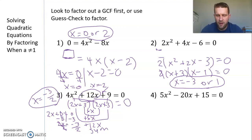I want you to pause for a second, look at number 4, and determine: should you do a GCF first or guess-check? Looking at 5x² - 20x + 15 = 0, I would ask myself, does 5 go into everything? 5 goes into 5, 20, and 15. If I divide out by 5, I can shrink things down so I don't have to use guess-check.